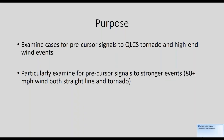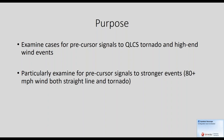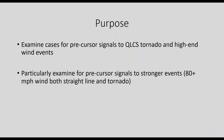We're looking to identify precursor signals for QLCS tornado and high end wind events, and particularly looking for precursor signals for stronger events — basically 80 to 85 mile per hour plus, both from straight line wind and tornado. The idea being that if you're making warning decisions and I give you the choice between catching the 90 mile per hour event and the 60 mile per hour event, we're going to mostly go to that 90 mile per hour event, seeing what precursor signals may be there that would really clue you in that this is a particularly serious event, whether in the form of a tornado or straight line wind.